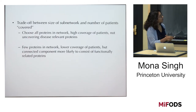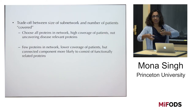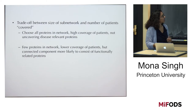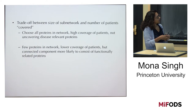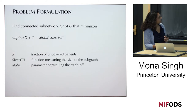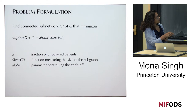There's a natural tradeoff between the size of the subnetwork and the number of patients covered. You could choose all proteins and have very high coverage, but you'd lose any sense of proximity. Or you could identify very few proteins that are proximal to each other, with lower coverage but more likely to consist of functionally related proteins. Our formulation finds a connected subnetwork G' of G that minimizes two things balanced by a single term alpha: the fraction of uncovered patients, and the size of the subnetwork.